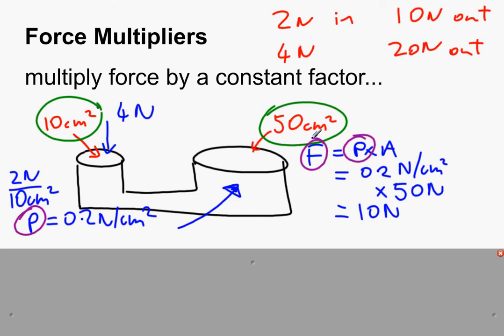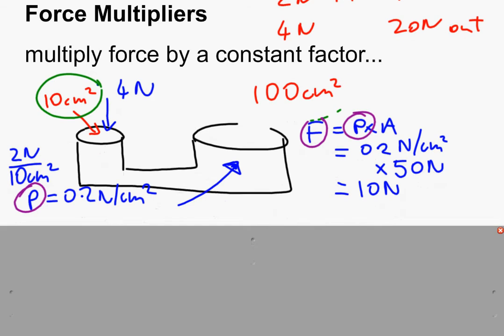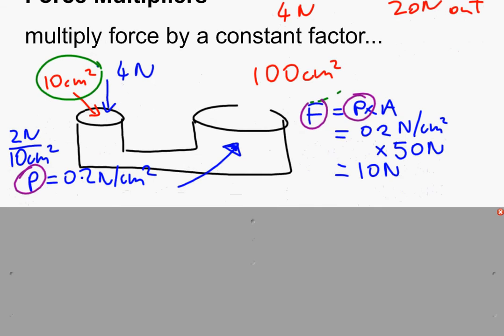And it would change my force multiplication. I could maybe change this to a bigger one, a hundred centimeters squared. Now my hydraulic system would multiply the force by 10 because the ratio of the areas is 1 to 10. So hydraulic systems, one example of a force multiplier, always multiplies the force by a constant amount.